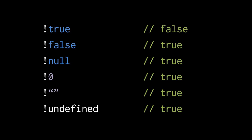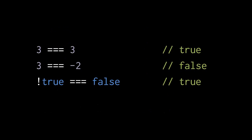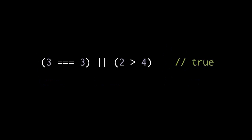Here are a few more examples of logic operations. First, this is a test of whether 3 is equal to 3, which of course it is, so it returns true. Then we have a test of whether 3 is equal to negative 2, which it does not, so it returns false. Then we have not true equals false — the not operator has higher precedence, so not true evaluates to false first, and false equals false is true. This expression tests whether 3 is equal to 3, or 2 is greater than 4. Since 3 equals 3 is true, the or is true and the whole expression returns true. Note that the parentheses here could have been left out, because the equals operator and the greater-than operator both have higher precedence than or, so they would have been evaluated first anyway.